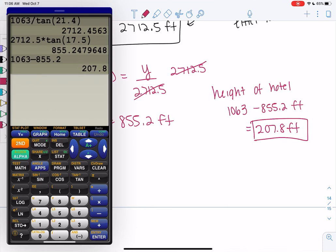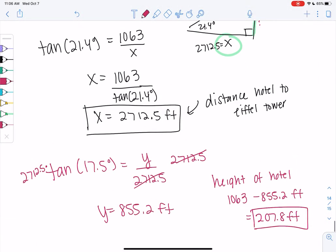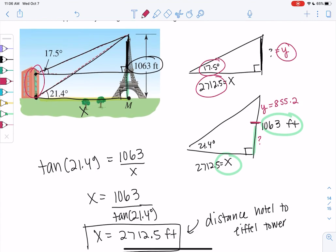We just want to get comfortable with drawing images of what's going on. Identifying maybe more than one triangle and more than one relationship. Keep track of the different angles. We can use trig on multiple triangles.